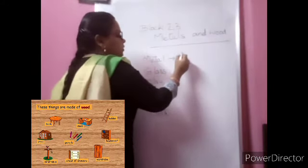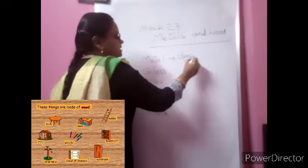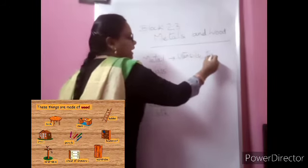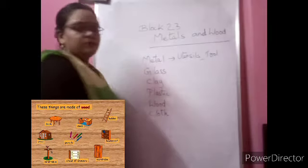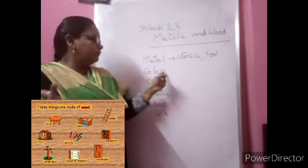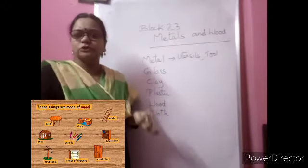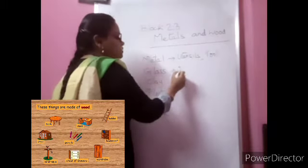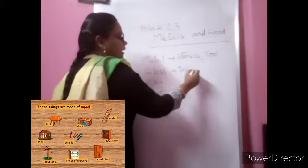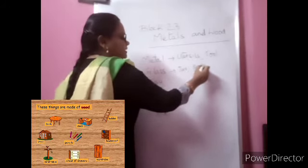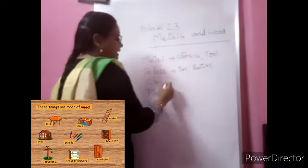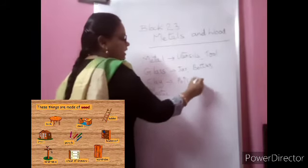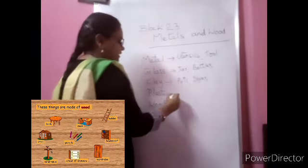For metals, in your kitchen you can see utensils — vessels are made up of metals. Also tools like a hammer, screwdriver, and nail are made up of metal. For glass, you can have a juice jar and bottles made up of glass. For clay, we will have pots and diyas made up of clay at home.